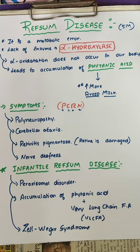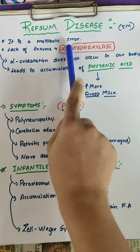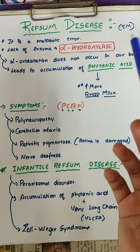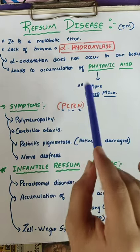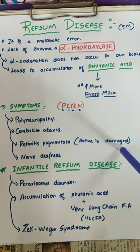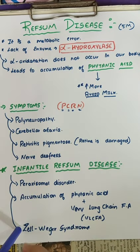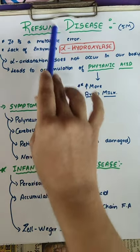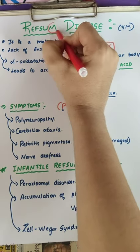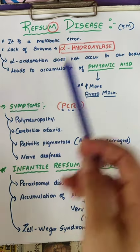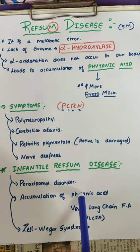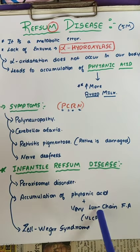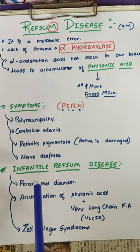So to recap: Refsum disease is a metabolic error which occurs due to the lack of enzyme alpha hydroxylase. Alpha oxidation is not taking place, so there will be accumulation of phytanic acid. There are four symptoms — polyneuropathy, cerebellar ataxia, nerve deafness, and retinitis pigmentosa (PCRN). Those who have Refsum disease should avoid milk and dairy products. Infantile Refsum disease is a peroxisomal disorder with accumulation of phytanic acid along with VLCFA (very long chain fatty acids).